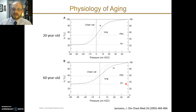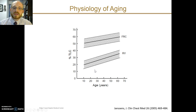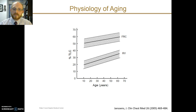Residual volume is similarly higher for the 60-year-old compared with the 20-year-old. This is shown another way: normal residual volume as a percentage of total lung capacity increases over the decades, as does functional residual capacity. This results from decreased elasticity of the lungs, which contributes to an increased closing volume, as well as changes in thoracic cage compliance and the balance between those two forces.